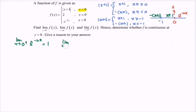For the limit when x approaches 0 from the left, we refer to the real number line and the function is x plus 1. If we substitute 0, the value of y approaches 1.